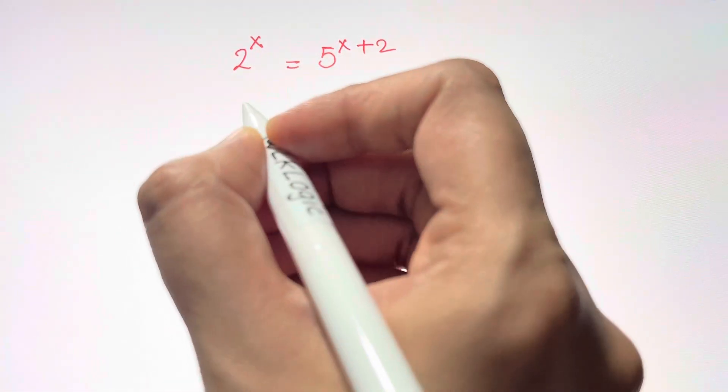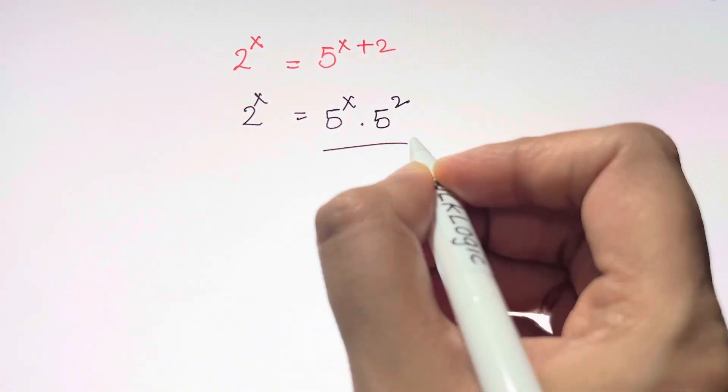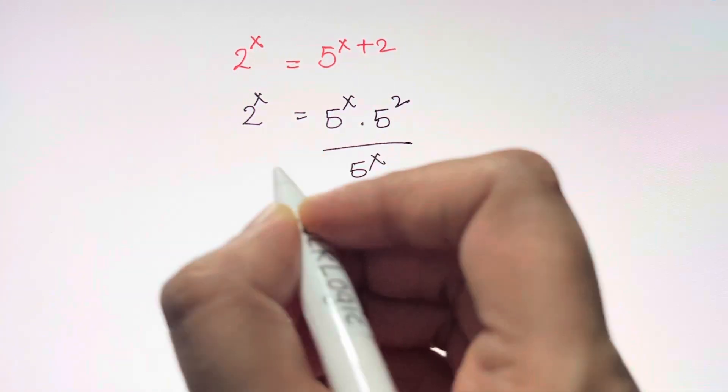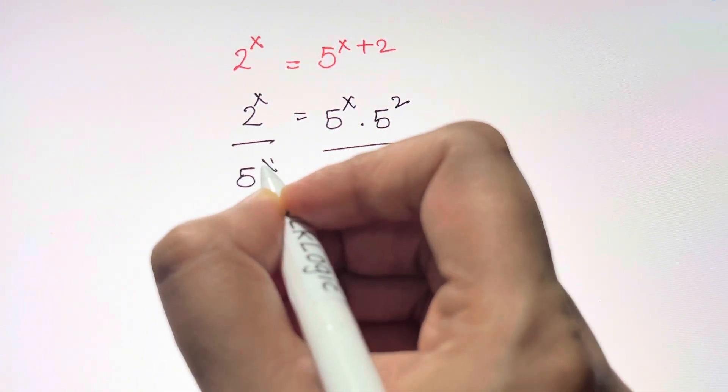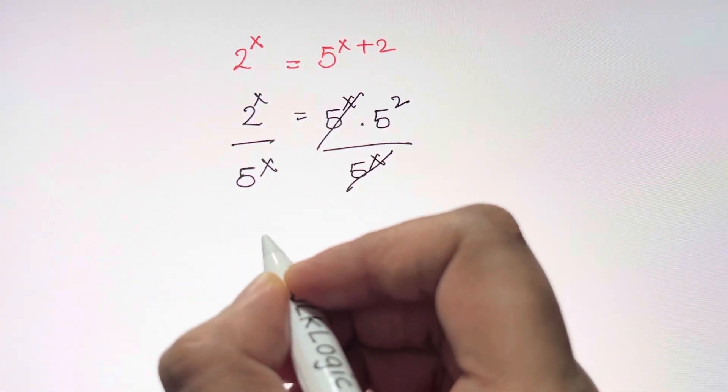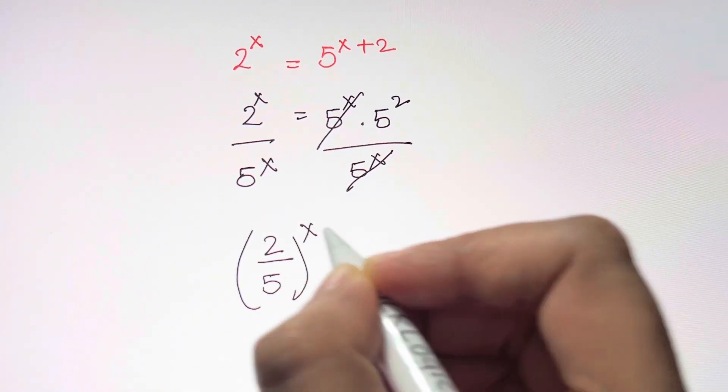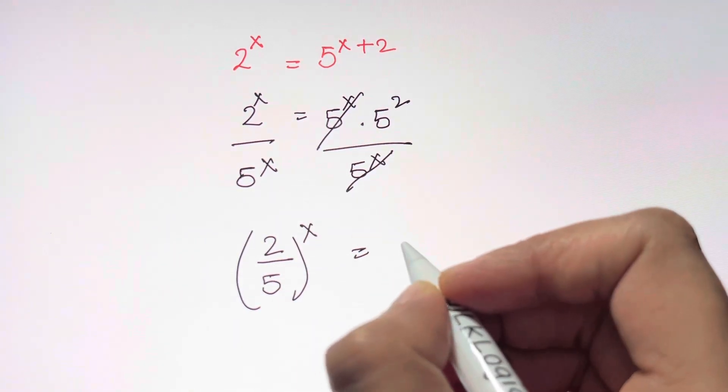So this is equal to 2^x. Now to bring exponents on one side, we are going to divide by 5^x and cancel out this term, so we are left with (2/5)^x. You can bring the exponent x outside now, and that's equal to 5^2.